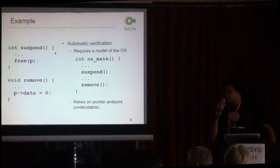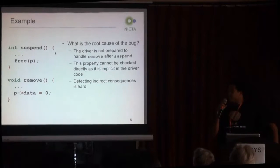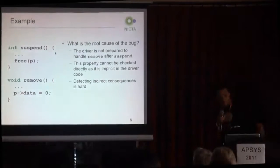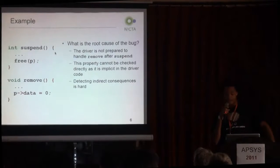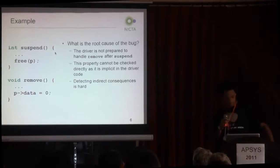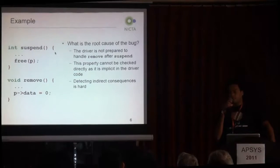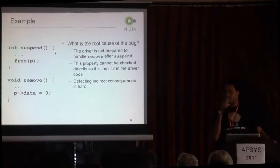We are actually looking for the wrong bug. The real bug here is that the programmer did not expect remove to be called after suspend, and we are looking for the pointer bug, because it should be simpler than that. What we claim is that the source code should explicitly show the driver's intention in such a way that we could detect this bug automatically and without having to do any pointer analysis.